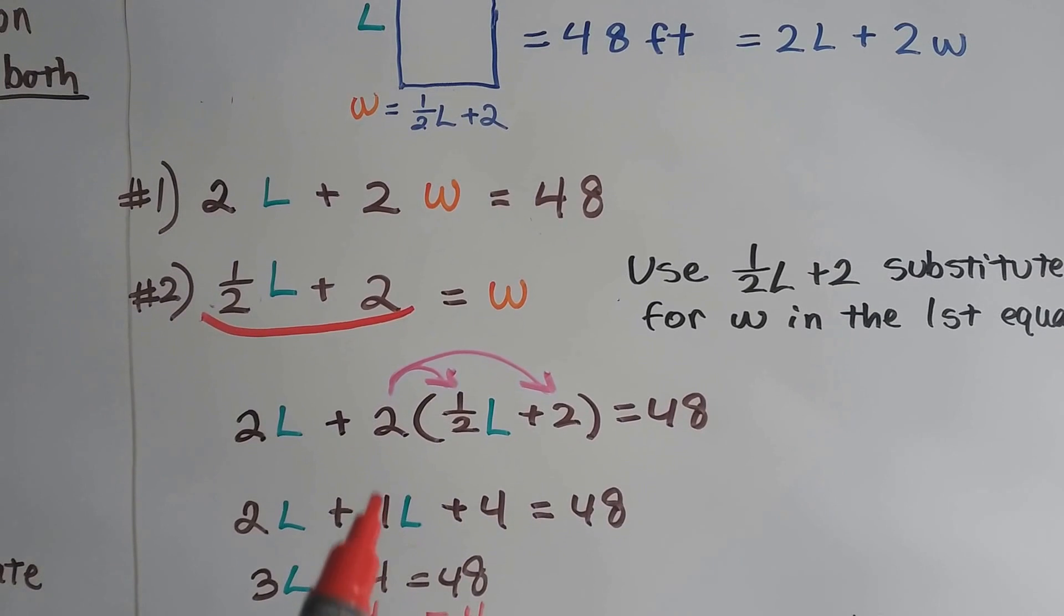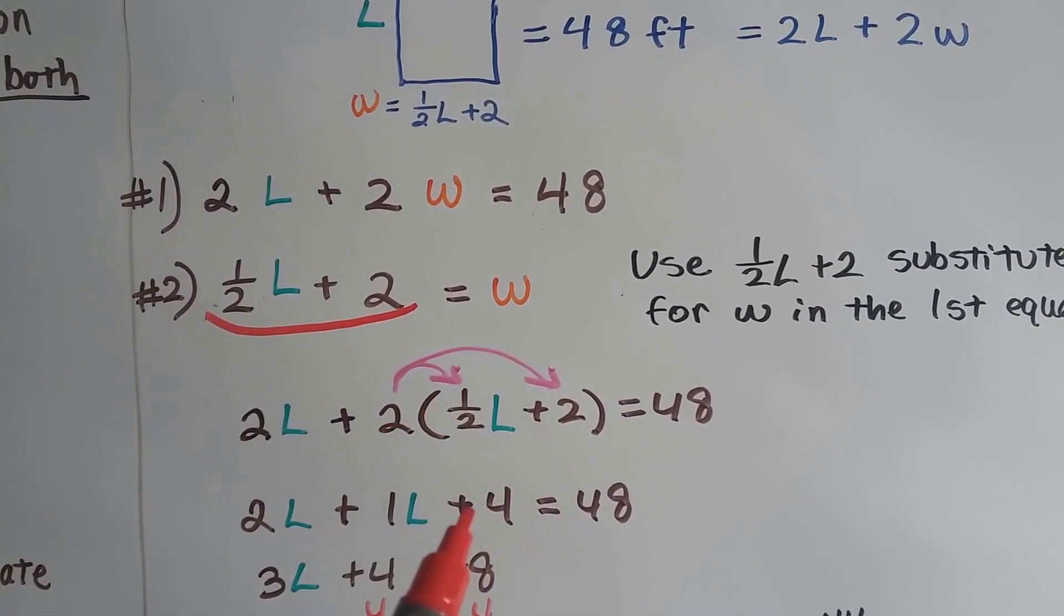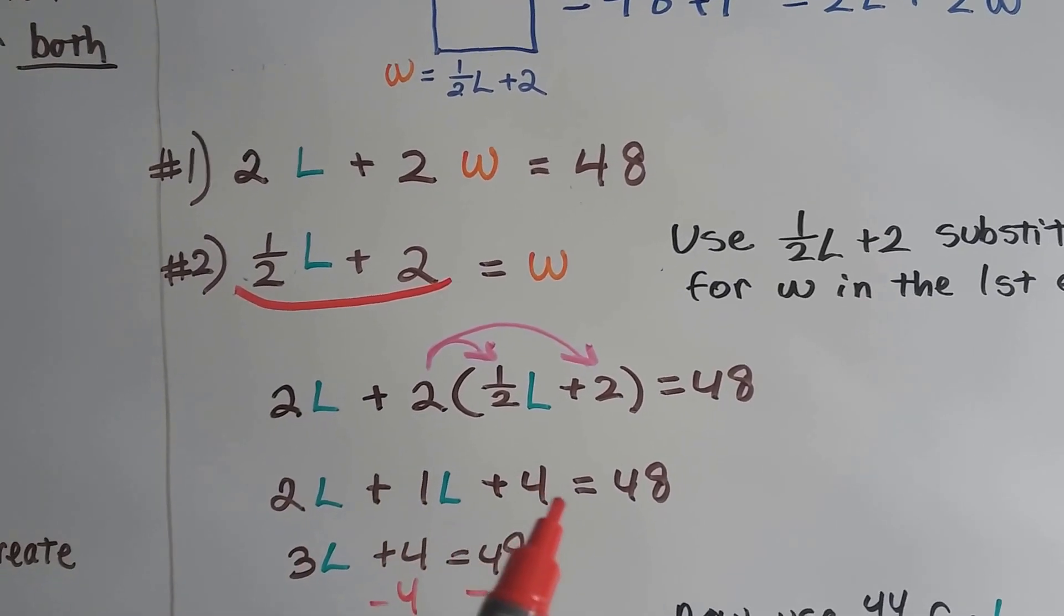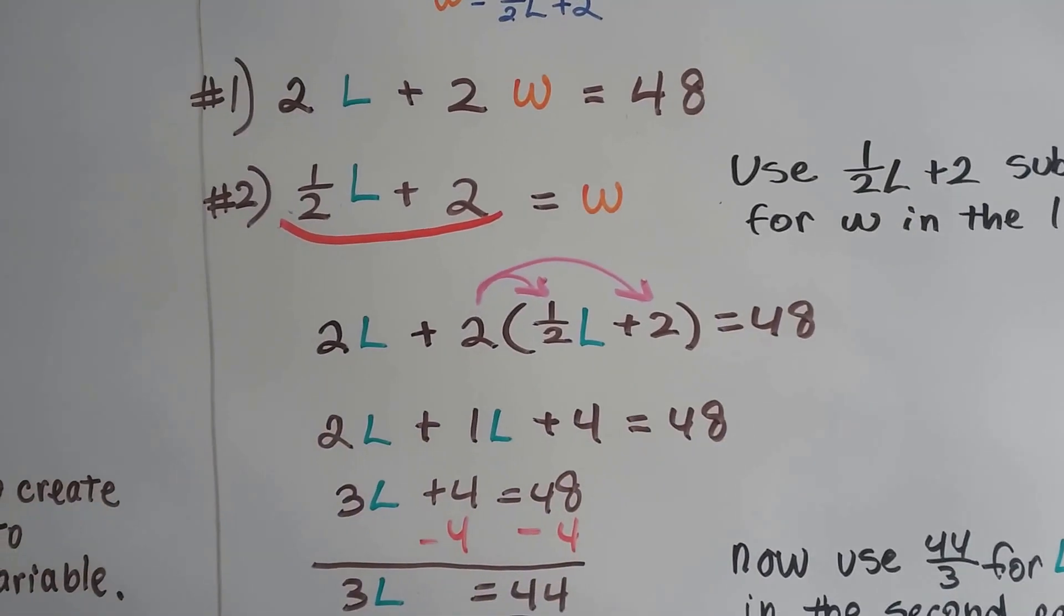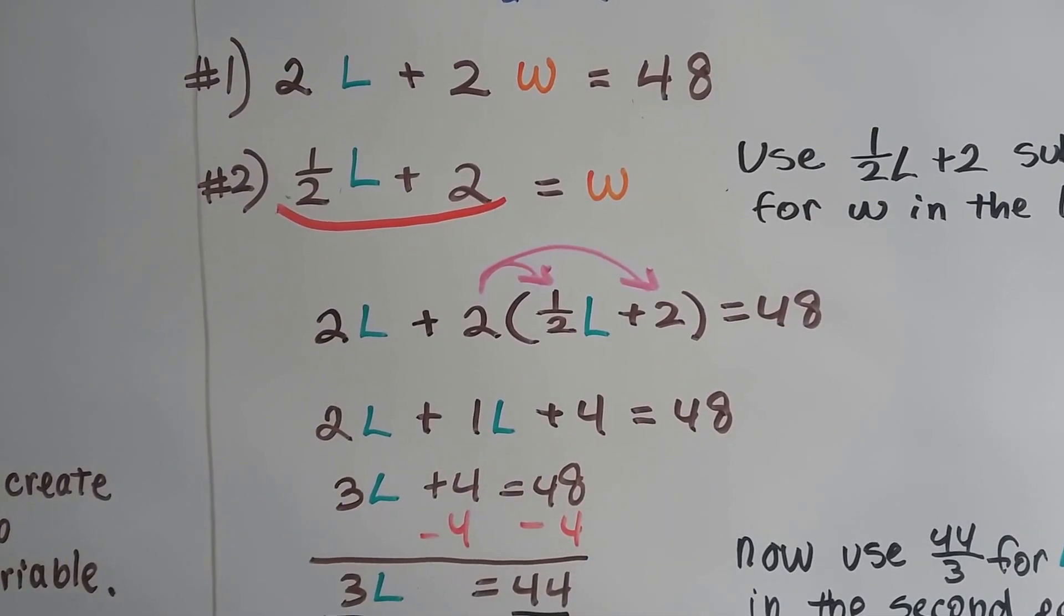We use a distributive property and two times a half is one whole and two times two is a plus four. So we've got 2L plus 1L plus 4 equals 48. We combine like terms and we get 3L plus 4 equals 48.